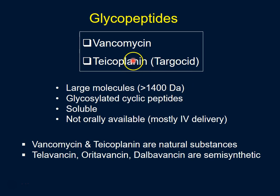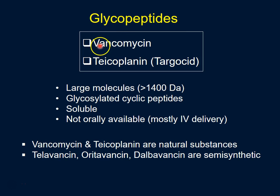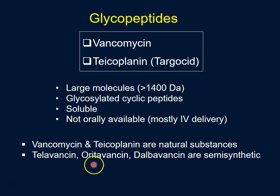In the next two sections I'm going to talk about glycopeptides, divided into two parts. This presentation will cover the naturally derived glycopeptides such as vancomycin and teicoplanin. The next presentation will cover the semi-synthetic glycopeptides, which include telavancin, oritavancin, and dalbavancin.